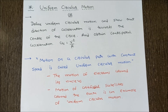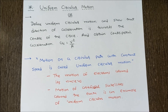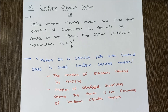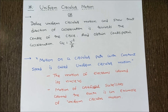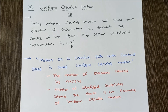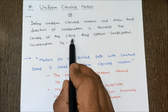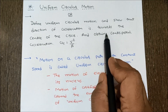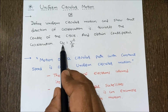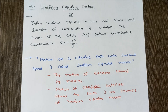Hello friends, today we discuss uniform circular motion. Our question is: define uniform circular motion and show that the direction of acceleration is towards the center of the circle, and obtain centripetal acceleration, that is ac = v²/r.